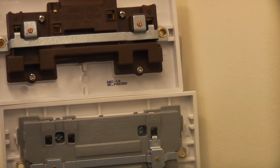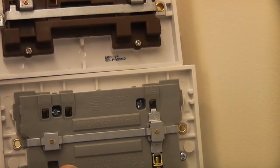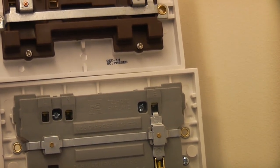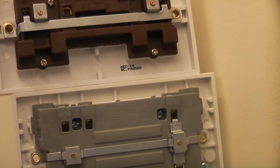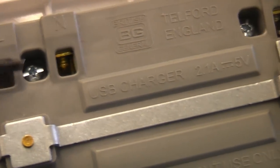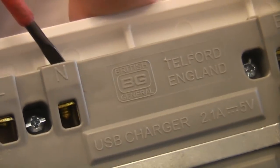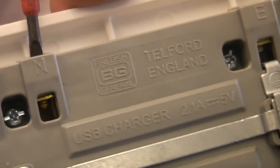I've now got the old socket on the top with the new socket below, and you will see that the terminals are in slightly different positions. So we do need to be aware of that when we're putting the new socket in position. It is a good idea to ensure that the terminals are undone fully when you try to insert the wires. It does make the job a lot easier.